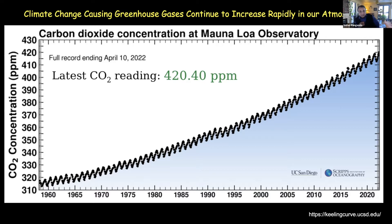CO2 has crossed the 400 parts per million mark and has already crossed the 420 mark — the rate at which it's accumulating is pretty incredible. On the other side of that, a gas like CO2 stays in the atmosphere for hundreds of thousands of years. Once you put it out there, it stays — so it's really a question of how much you emit, because once it's there it's going to stay for a very long time.